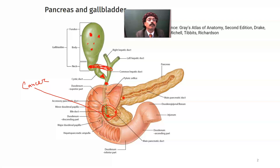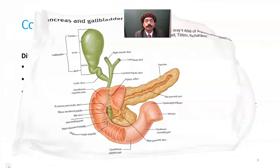Courvoisier's Law says it is most unlikely that a non-tender, palpable gallbladder with obstructive jaundice is due to stone. But there are some exceptions, as we have discussed.